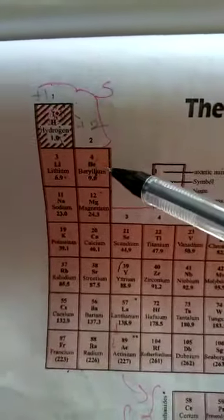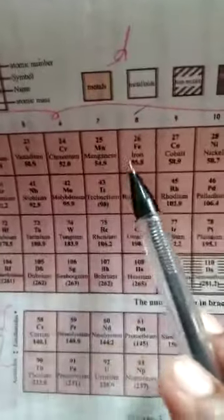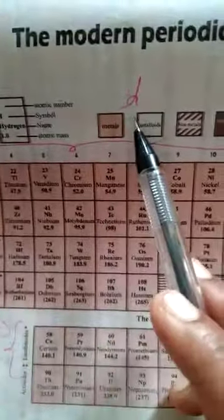First group and second group are called as S-block elements. And groups 3, 4, 5, 6, 7, 8, 9, 10, 11, 12 are called as D-block elements.